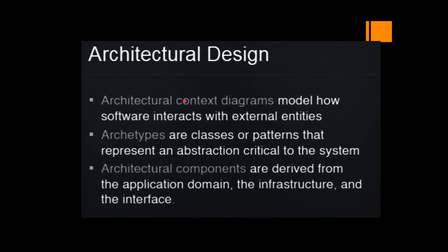What does the architectural context diagram ACD tell us? It models how the software interacts with the external entities. Once we develop the software, it has to interact with external machines, users, or components. These ACDs describe the context by which the software interacts with the external systems.